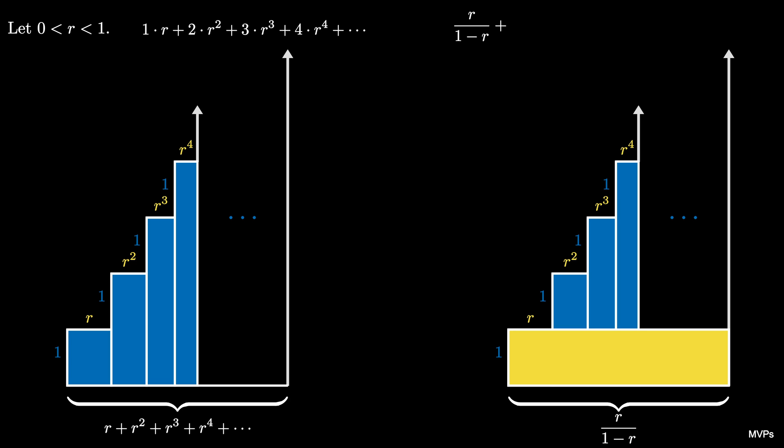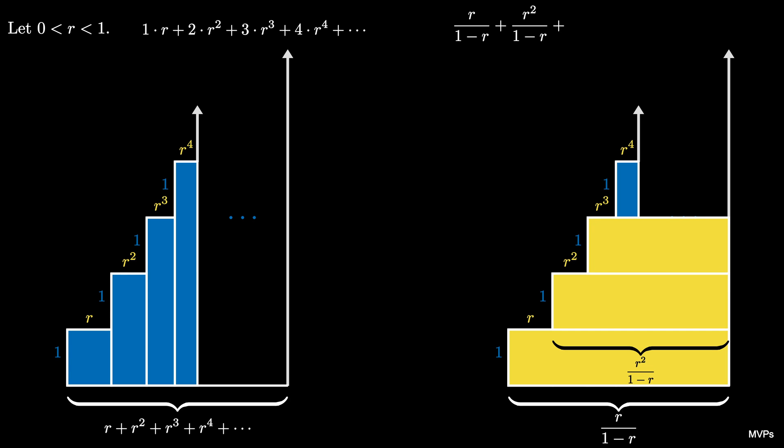The second rectangle also has height 1 and width of a geometric series, and thus they enclose areas of r cubed over 1 minus r and r to the 4th over 1 minus r. We again continue this process forever with smaller and smaller rectangles giving a different infinite sum for the area.